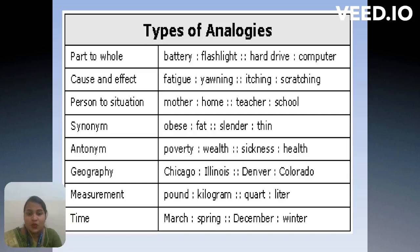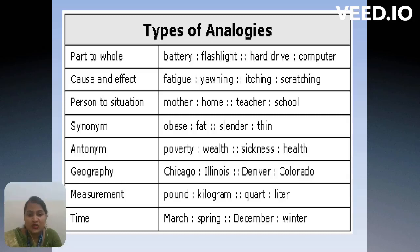The next type is cause and effect — how causes and effects happen. For example, fitting is related to yawning, and itching is related to scratching. The base word is something relevant to the other one. This is what is called an analogy.